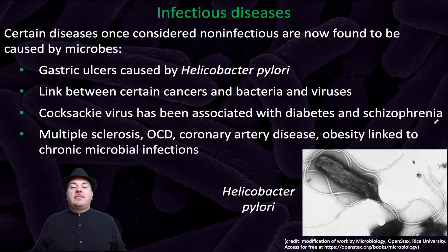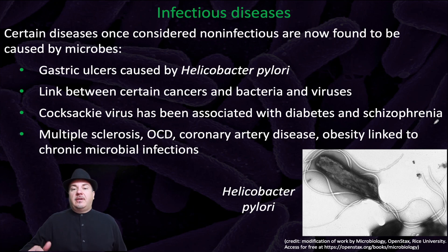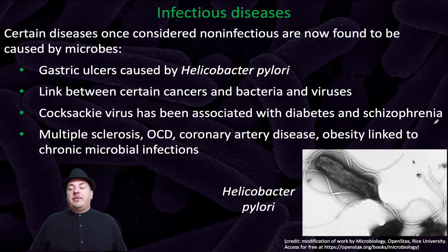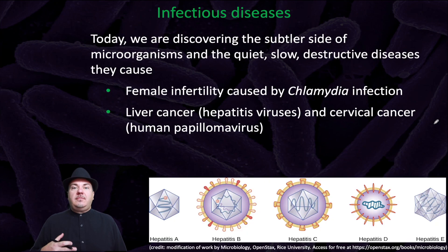Certain diseases once considered non-infectious are now found to be caused by microbes, such as gastric ulcers caused by Helicobacter pylori, which you can see in the image at the bottom of the figure. We've found links between certain cancers and bacteria or viruses. The Coxsackievirus has been associated with diabetes and schizophrenia. Multiple sclerosis, OCD, coronary artery disease, and obesity can be partially linked to chronic microbial infections. Today, we're discovering the subtler side of microorganisms and the quiet, slow, destructive diseases they cause.